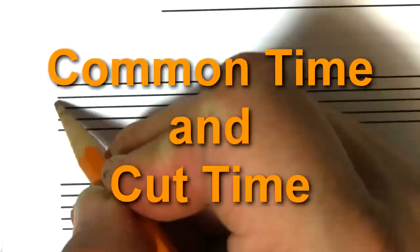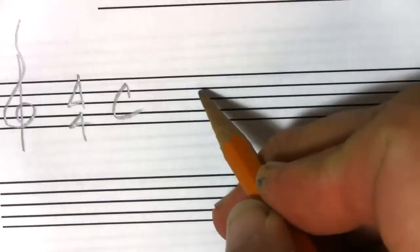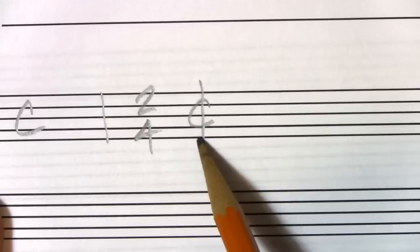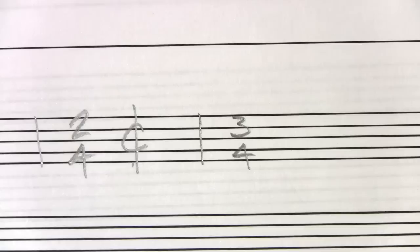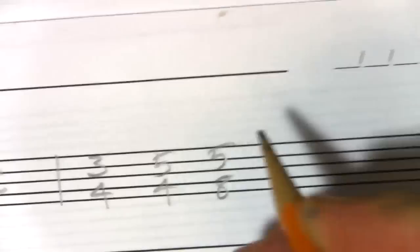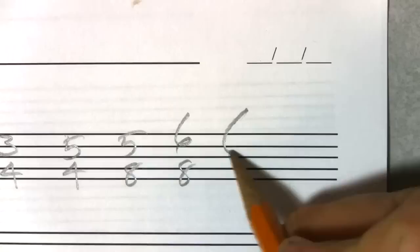Time signatures have some additional symbols. 4/4 is called common time — they just put a C for common time. 2/4 was very popular back in the day as half of 4/4, so it's called cut time — a C with a line through it. Other common time signatures include 3/4, 7/4, 2/4, 5/4, 5/8, and 6/8. I like 6/8 — write it big so you can see exactly what's going on.